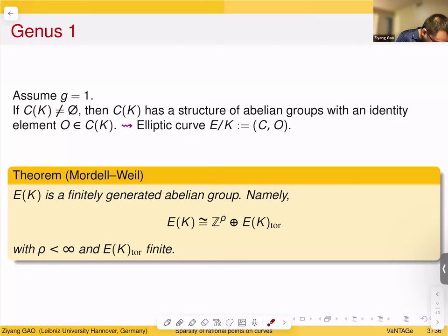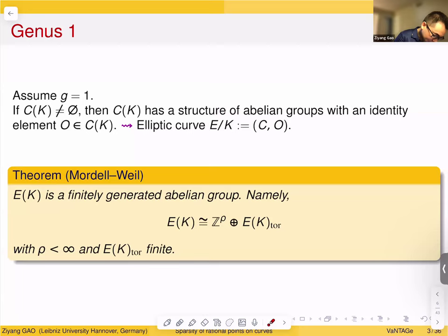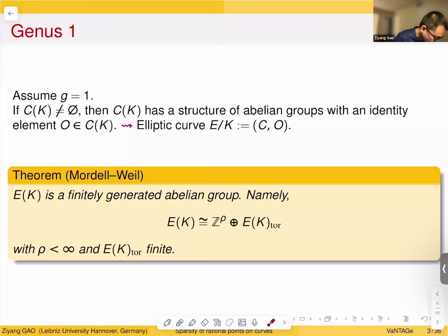When G equals zero and there is one rational point, there are infinitely many, and there are also many small ones — we also have the local-global principle. When G equals one, the situation becomes much more complicated but very interesting. If there is at least one rational point, then C(K) carries an extra structure of an abelian group with identity element O, making it an elliptic curve. Since E(K) is an abelian group, it has a torsion-free part Z^ρ for some ρ, and a torsion part.